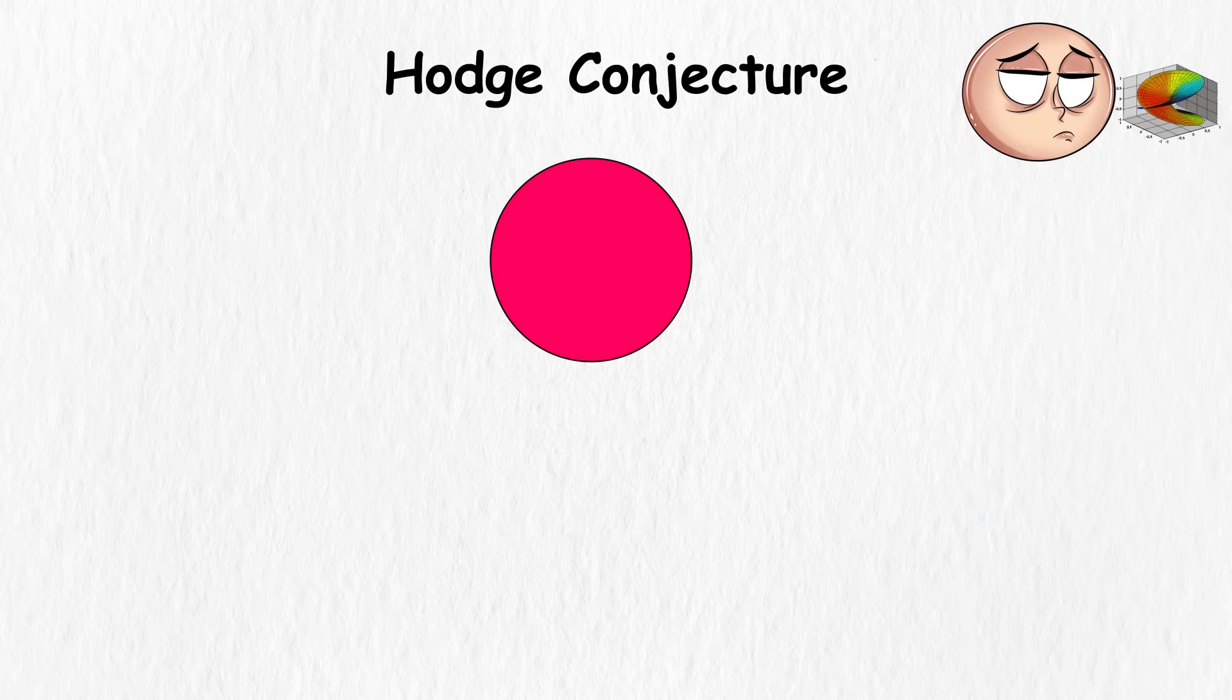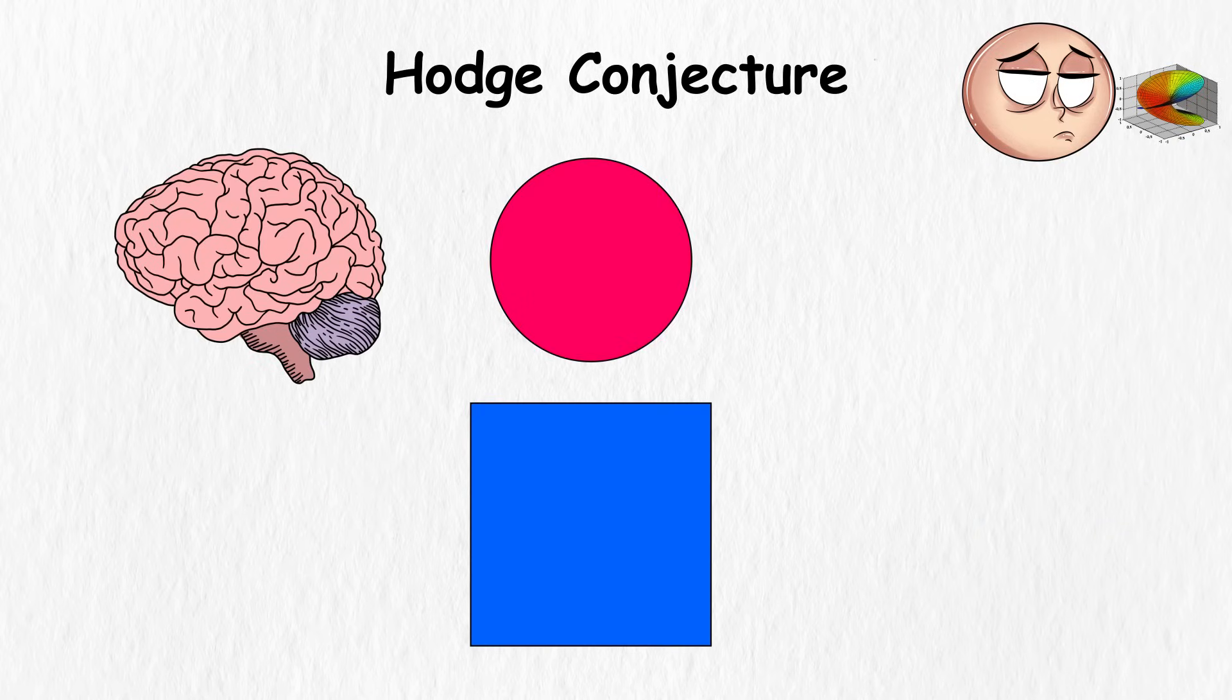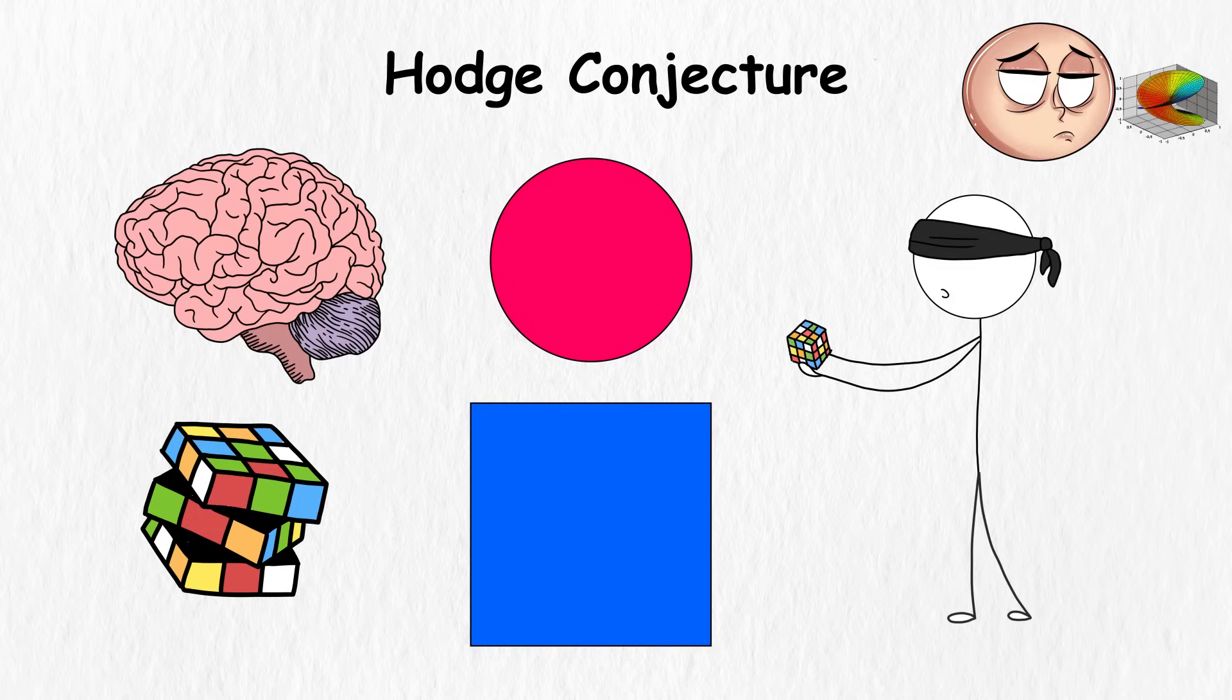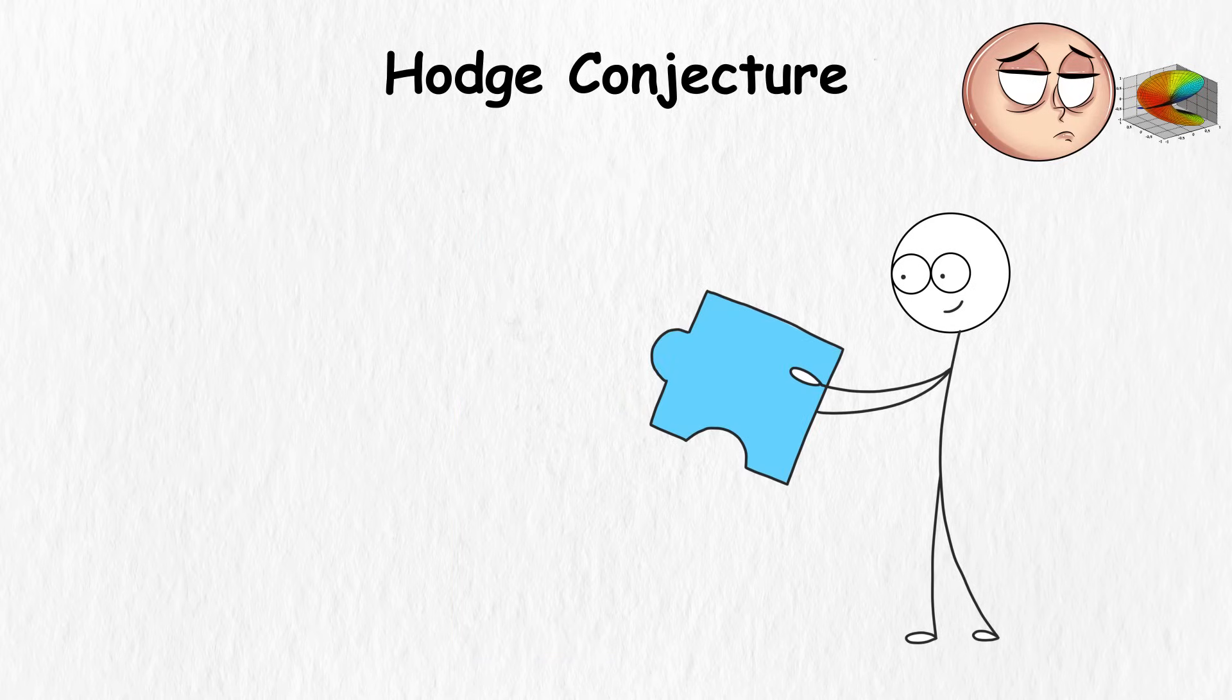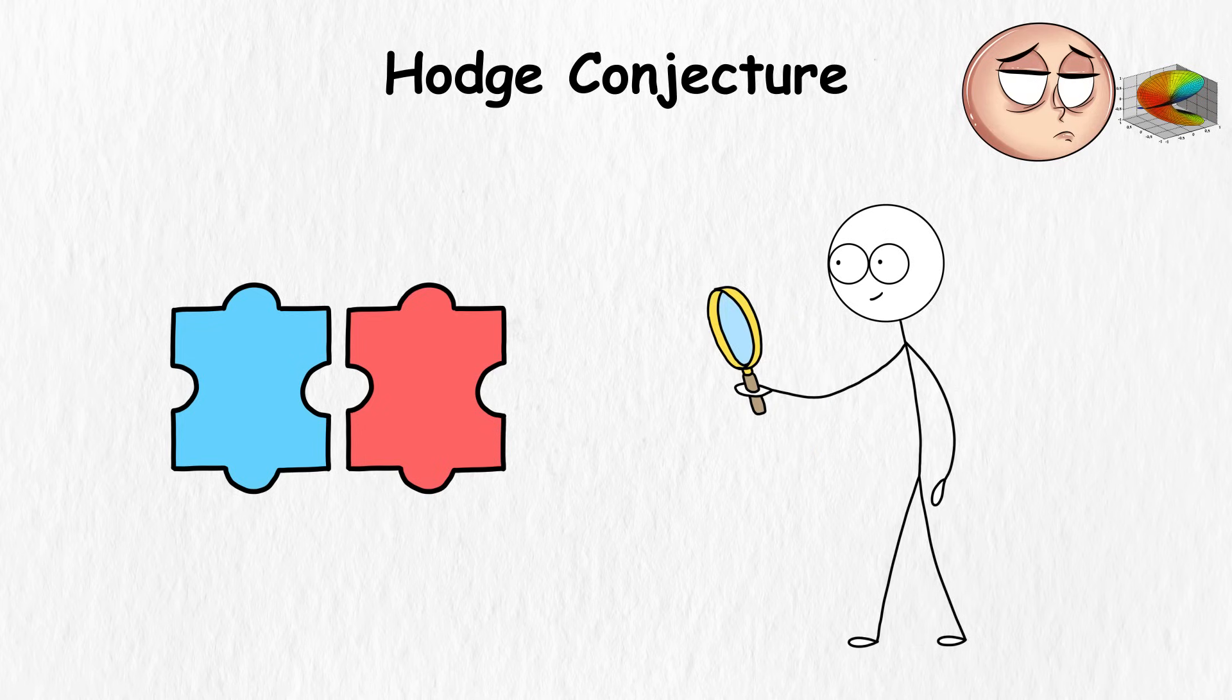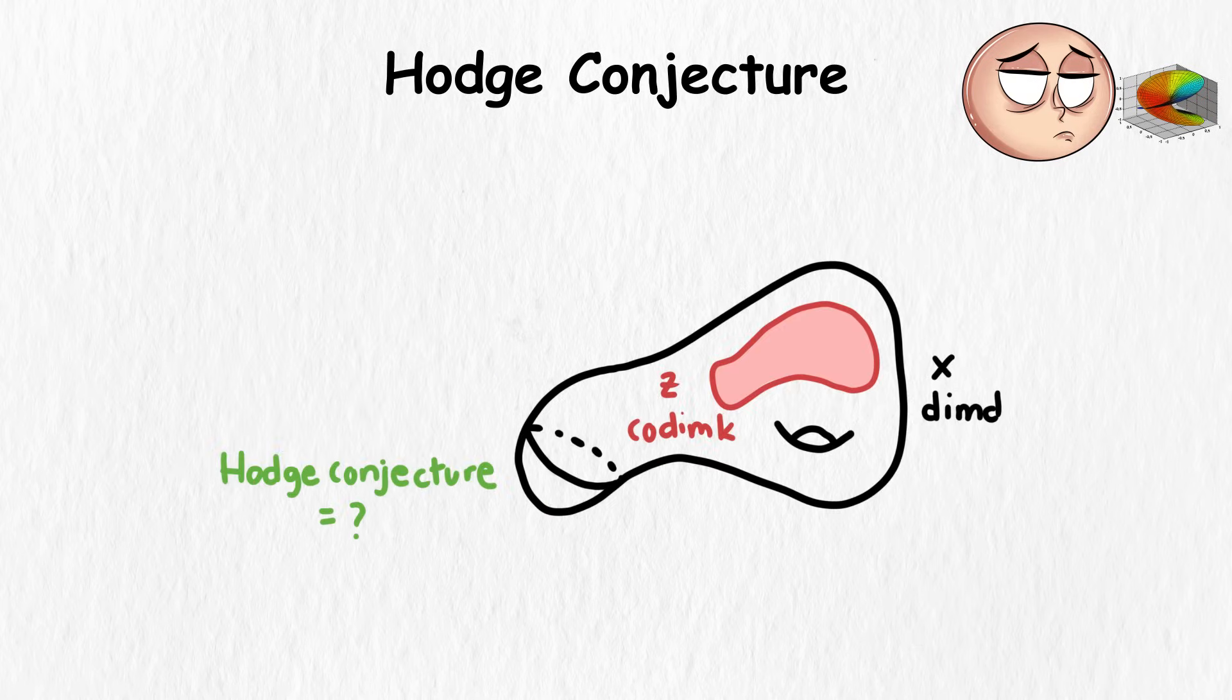These shapes aren't your usual circles or squares, they're mind-bendingly complex. Visualizing them is like trying to solve a Rubik's Cube blindfolded. Cracking the Hodge Conjecture without the right pieces is like doing a jigsaw puzzle where every piece looks identical. You wouldn't have a clue where to put each piece, just like mathematicians struggle to find the right algebraic cycles for every hole.